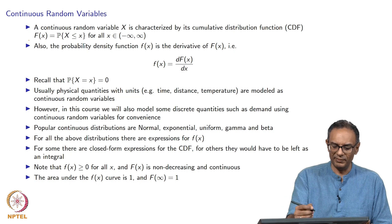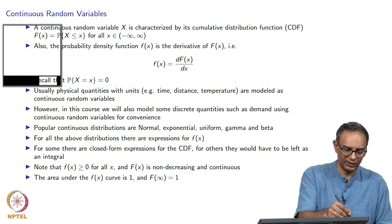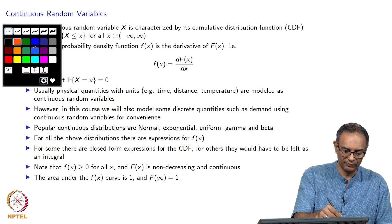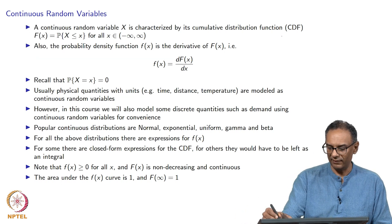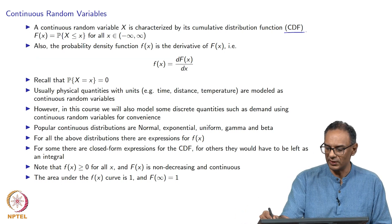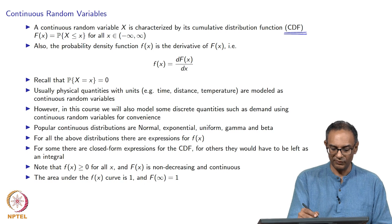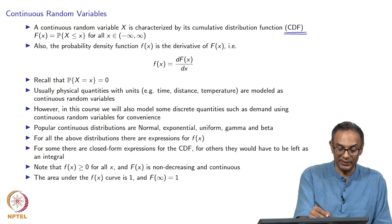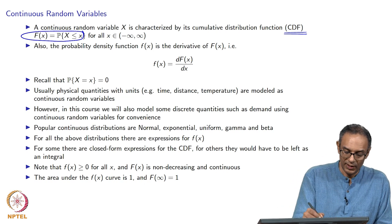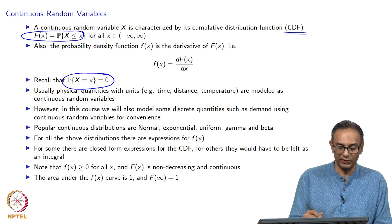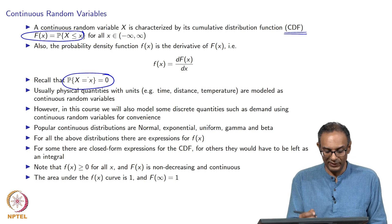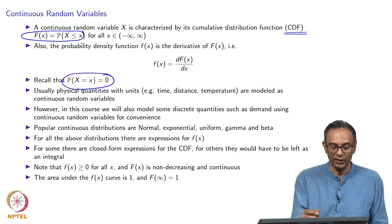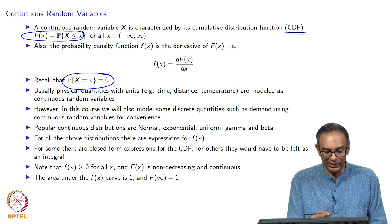A continuous random variable x is typically characterized by what is called the CDF, the Cumulative Distribution Function. Why do we need something like this? Because earlier we had used the probability mass function, but here the mass is 0 for all values of little x. Therefore, the probability mass function is meaningless.